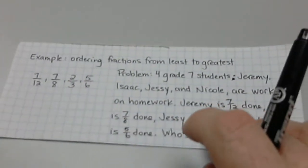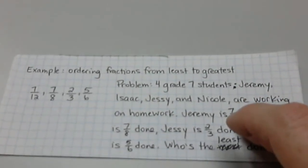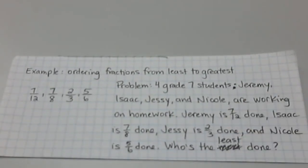Now, I have a bit of a problem, and I decided to write it out. We're going to be ordering some fractions from least to greatest. The problem is that I have four Grade 7 students, Jeremy, Isaac, Jesse, and Nicole, who are working on homework. Jeremy is 7/12 done, Isaac is 7/8 done, Jesse is 2/3 done, and Nicole is 5/6 done. I'm curious, who is the least done?